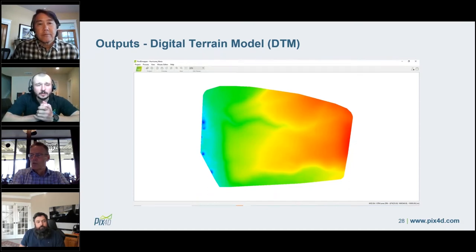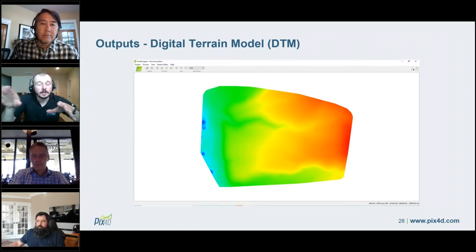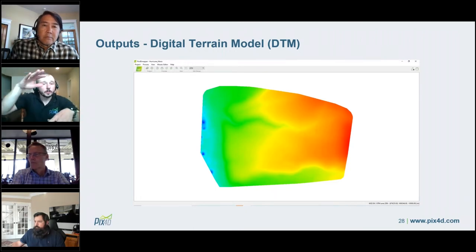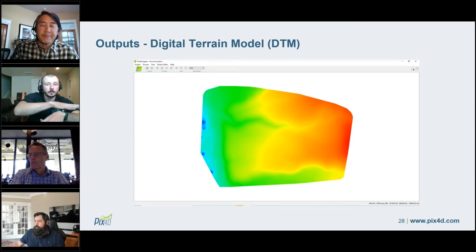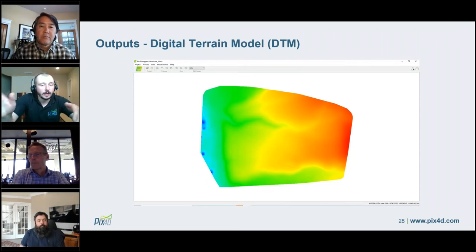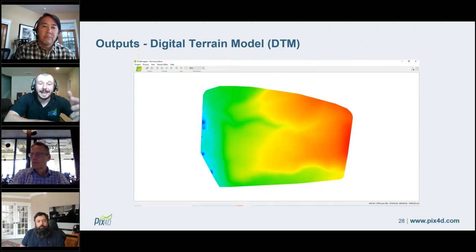The last output I want to cover is the DTM or Digital Terrain Model. The DSM showed everything in the project area — houses, debris, fallen trees, and the ground surface. The DTM is different: the software automatically filters the DSM of all above-ground features and gives you a bare-earth ground model. Looking at it now we don't see any houses — we see how elevation naturally changes, and in the middle you can see a natural canal or river that flows through the site, giving you an idea of the topography.